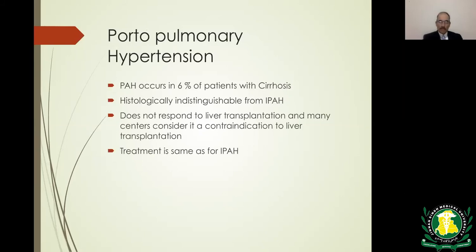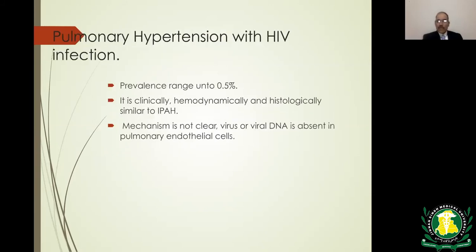Development of portopulmonary hypertension does not correlate with the severity of liver disease; histologically it is indistinguishable from idiopathic PAH. It does not respond to liver transplantation — in fact, liver transplantation is considered a contraindication by many centers. Treatment is the same as for idiopathic PAH. HIV-related PAH occurs in about 0.5 percent of cases, is hemodynamically and histologically similar to idiopathic PAH, and the mechanism is unclear — the virus is usually absent in the pulmonary capillaries.